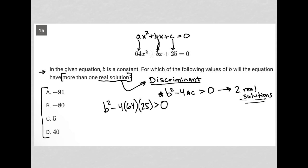Let's open up the calculator. 4 times 64 times 25 is 6,400. So I'm left with b squared minus 6,400 is greater than zero.